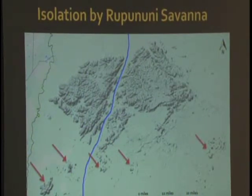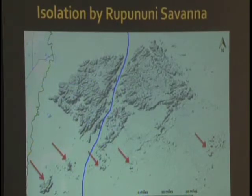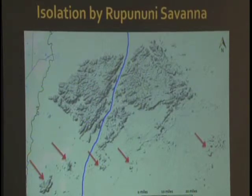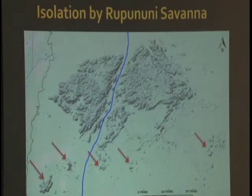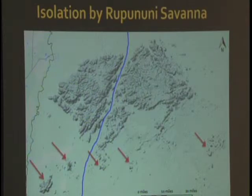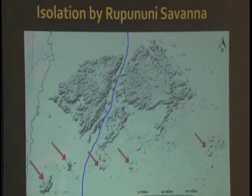I want to see not only how different each population is from each other, but how different they are from the Kanuku populations. We might find that some of these — you can see there are some little mountainous regions within — and they might basically represent channels for the organisms to disperse.